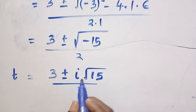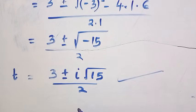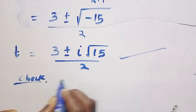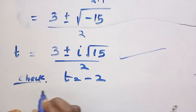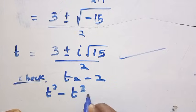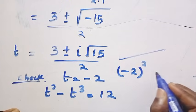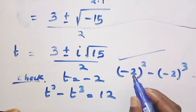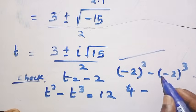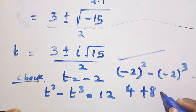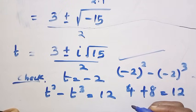So t equals 3 plus or minus i root 15 over 2, or t equals minus 2. Let's verify with t equals minus 2: substituting into t squared minus t cubed equals 12, we get minus 2 squared minus minus 2 cubed, which is 4 minus minus 8, giving 4 plus 8 equals 12. This checks out. Thanks for watching, see you in the next video. Never stop learning, bye bye.